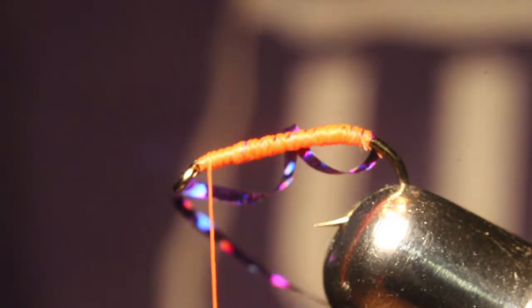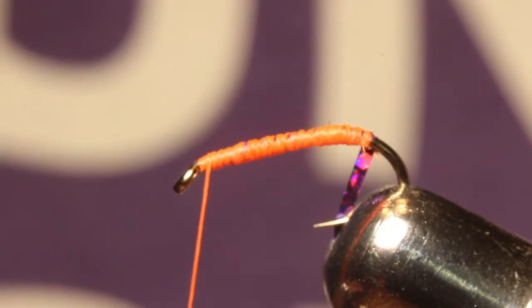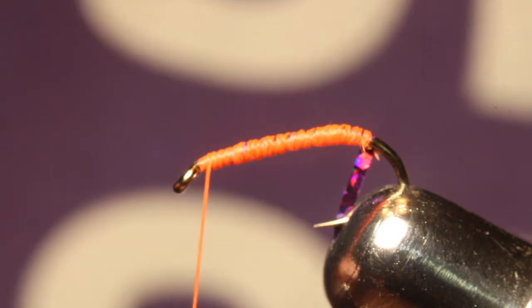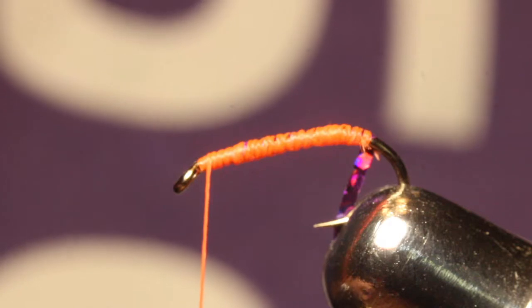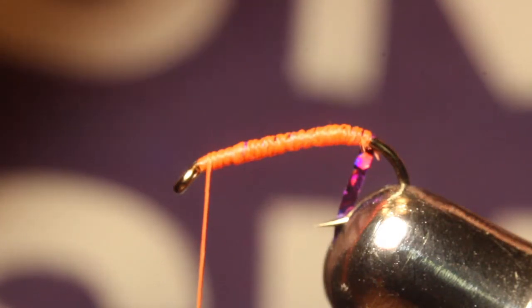So after you have attached your purple flashaboo, you're going to take a feather or a piece of a turkey feather. And I like the turkey feathers because they're really stiff and straight.